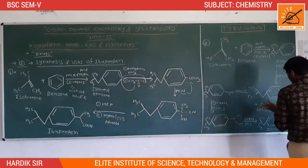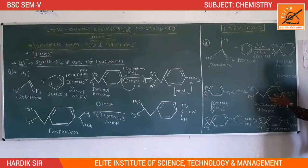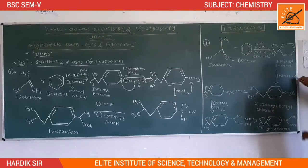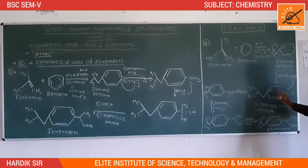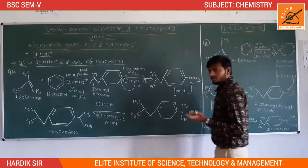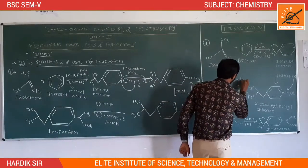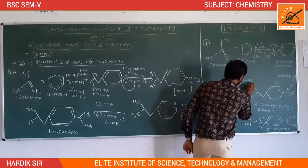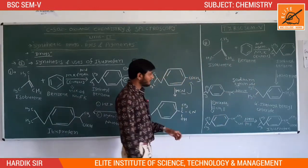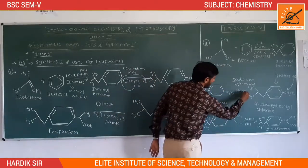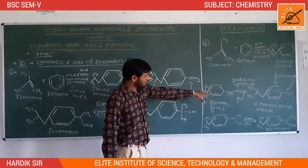That is our intermediate product, 4-isobutylbenzyl chloride. The CH2Cl group is combined with the isobutylbenzene to form 4-isobutylbenzyl chloride. This second intermediate product is then reacted with sodium cyanide, and the cyano group is combined to form the third intermediate product.